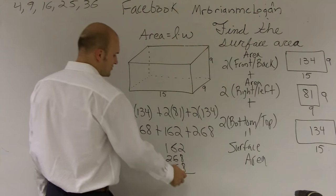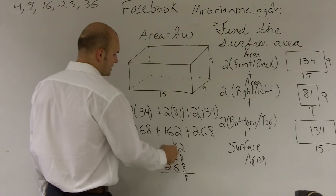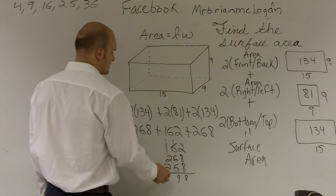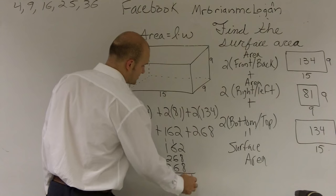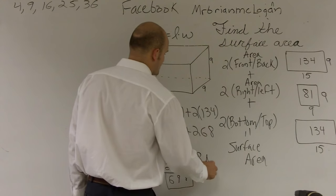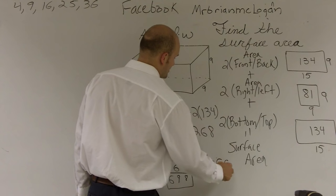8 plus 8 is 16, plus 2 is 18. This gives us 698. So surface area equals 698.